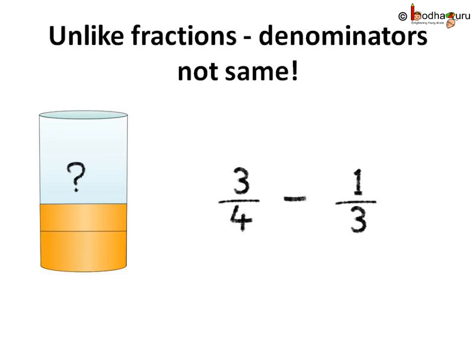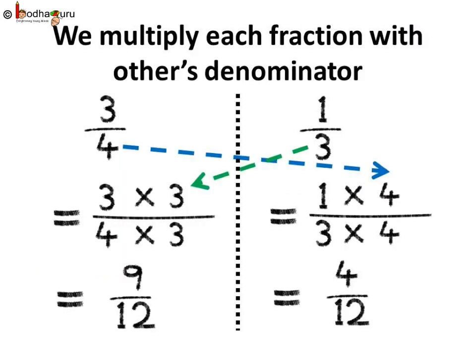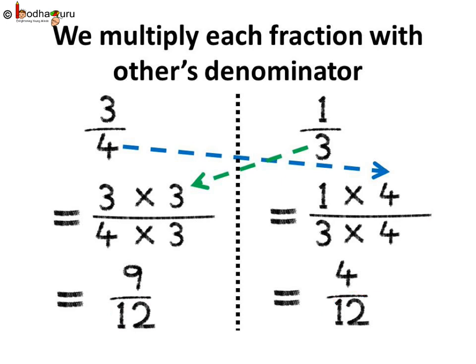So, in three by four and one by three, we need to make the denominators the same. So, we multiply each denominator with the other's denominator: four into three and three into four, so both are twelve. Then both the denominators will be equal.